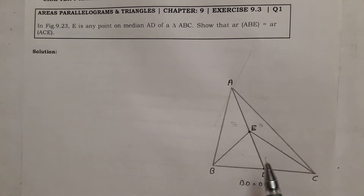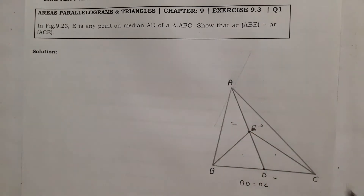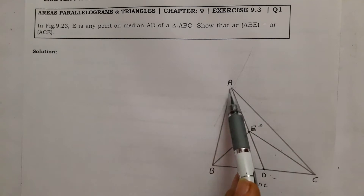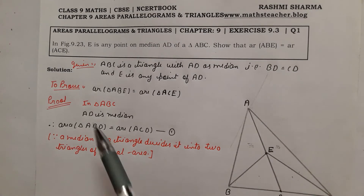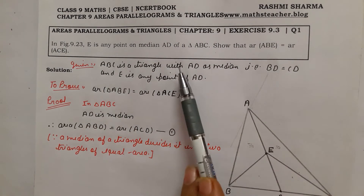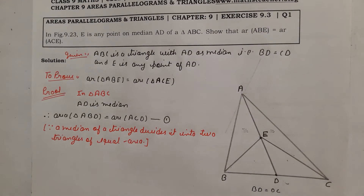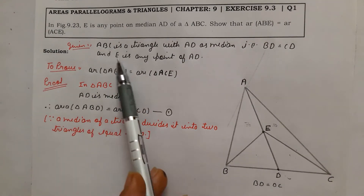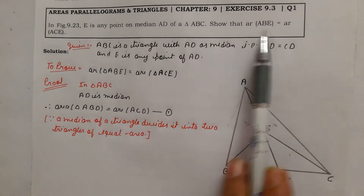We will subtract the smaller triangles to prove what is required. First we write: in triangle ABC, AD is the median, so triangle ABD is equal in area to triangle ACD. Given: ABC is a triangle with AD as median, so BD is equal to CD, and E is any point on AD.